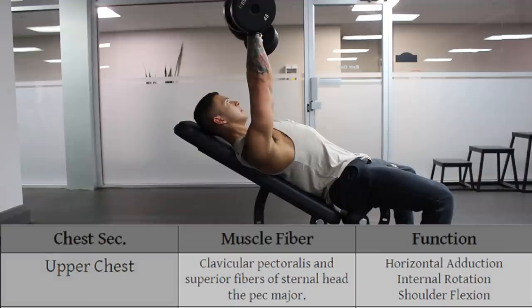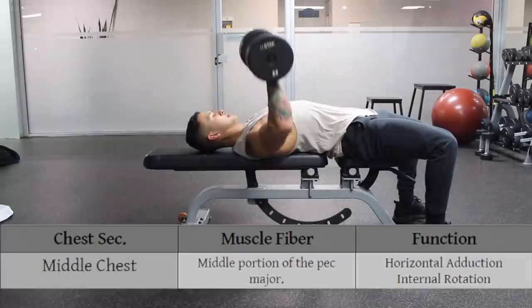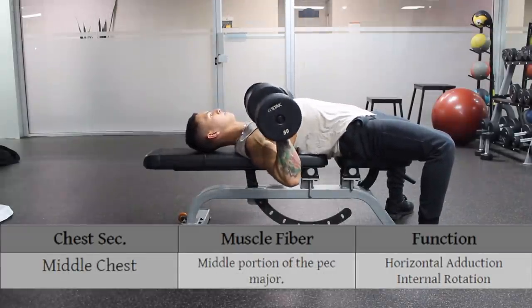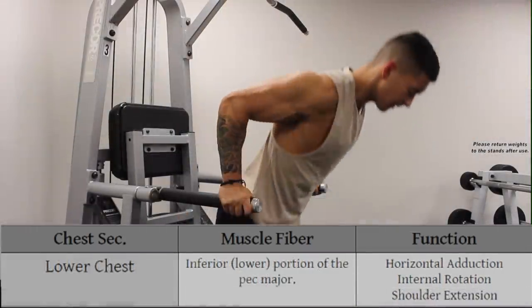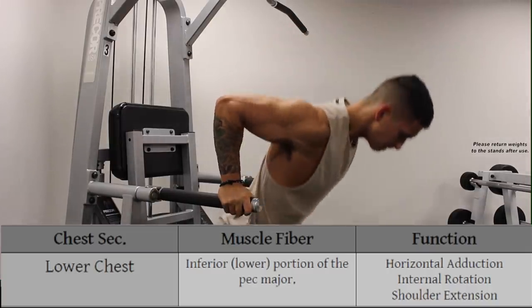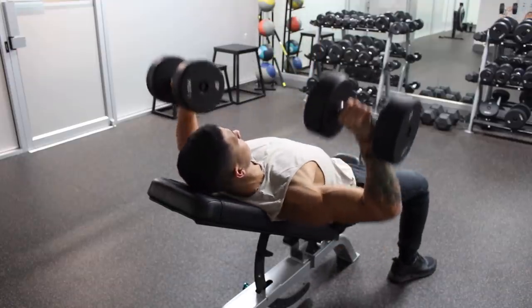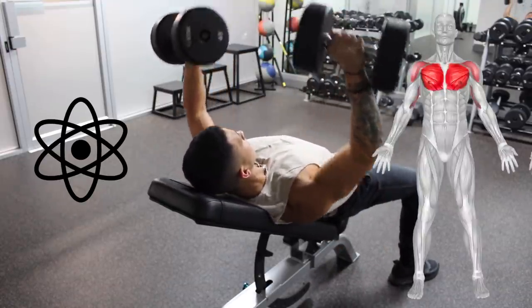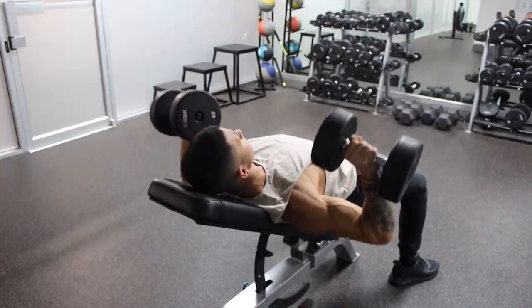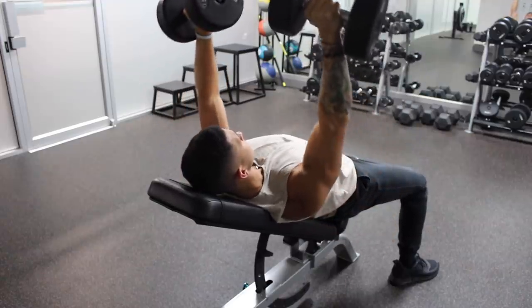Since the upper chest fibers run upward, they are best activated with chest exercises where the arms move upward. Since the middle chest fibers run horizontally, they are best activated with chest exercises where the arms move directly horizontally. And since the lower chest fibers run downwards, they are best activated with exercises that involve the arms moving downwards. In this video, I'm going to show you a well-rounded chest workout optimized based on current scientific literature and our anatomical understanding of the chest. Before we get started, it's important that you establish a solid mind-to-muscle connection with your chest, otherwise you'll be working secondary muscles and your chest won't grow as much as it could.